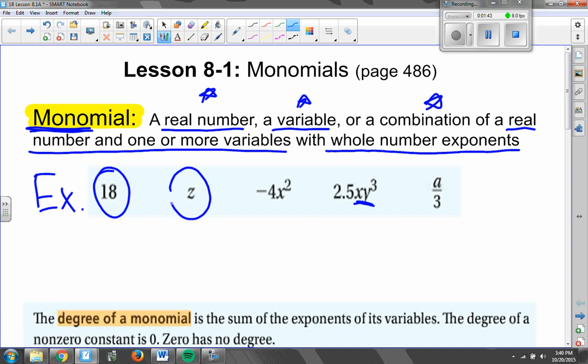It could be just a variable, just a letter, like variable z. It could be a combination of a number, negative 4, and a variable x, as long as, once again, we have whole number exponents.